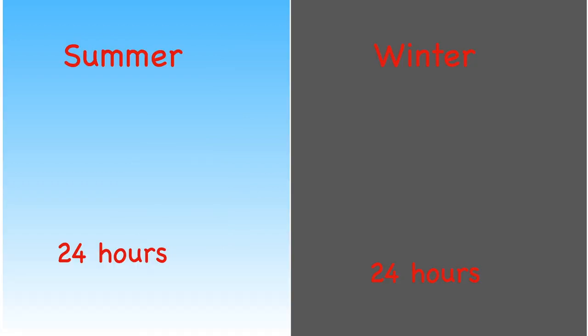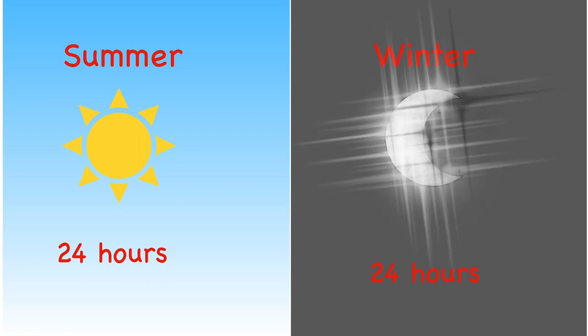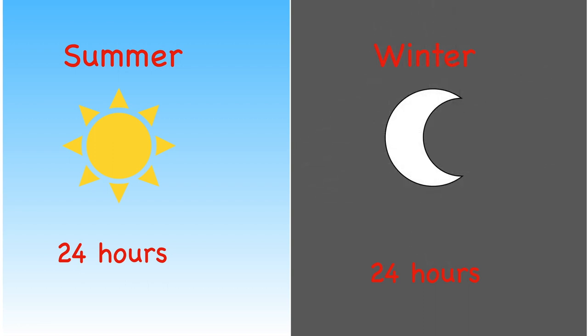In the summer it is light for 24 hours a day at the very top of the North and South Poles. Imagine going to bed when the sun is still shining. In the winter it is dark for 24 hours a day. There are masses of ice at the very tips of the North and South Poles. These are always frozen and are called polar ice caps.